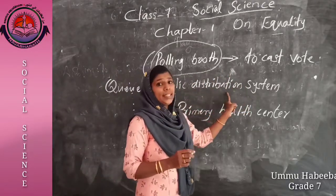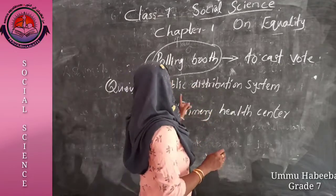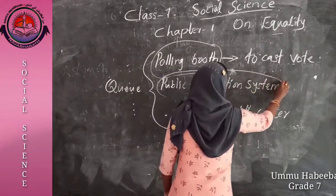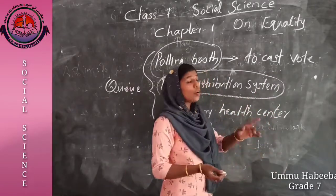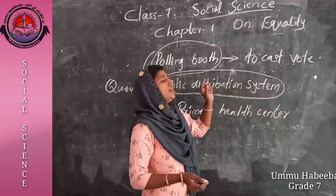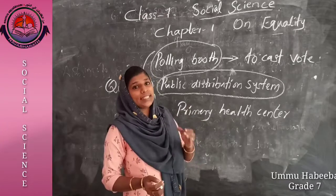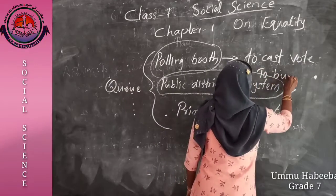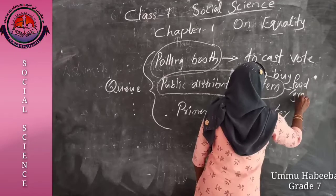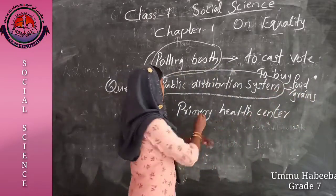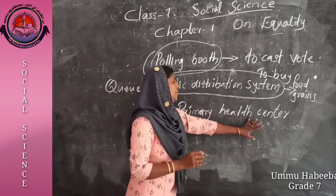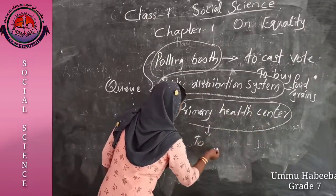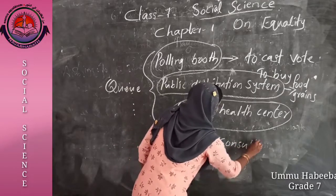The second location is the public distribution system, or PDS. The PDS is set up to provide food grains or necessary commodities to the public. The aim of the people coming to the PDS is to buy food grains or necessary commodities. The third location is the primary health center, where people are coming to consult a doctor.